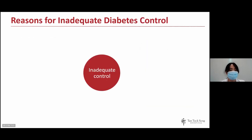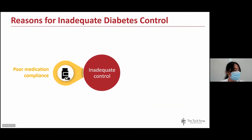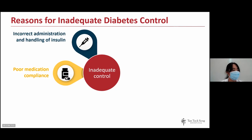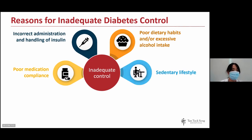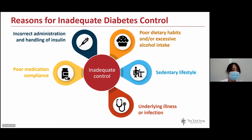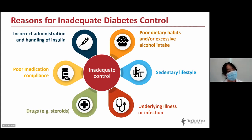There are many reasons for inadequate diabetes control. One main reason is missing medications or taking incorrect doses. Sometimes patients may use insulin incorrectly — injecting the wrong dose, wrong technique, or using expired insulin. It may also be due to not following meal plans, taking excessive alcohol, a sedentary lifestyle, underlying illness or infection, or medications that can increase blood sugar such as steroids.